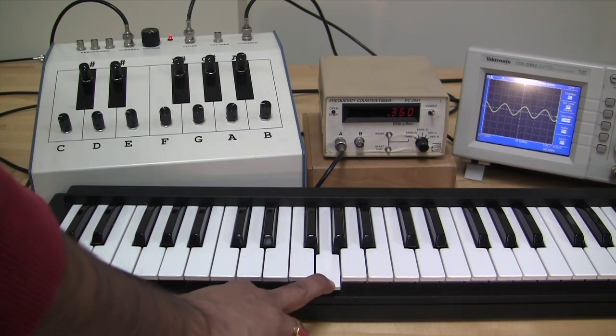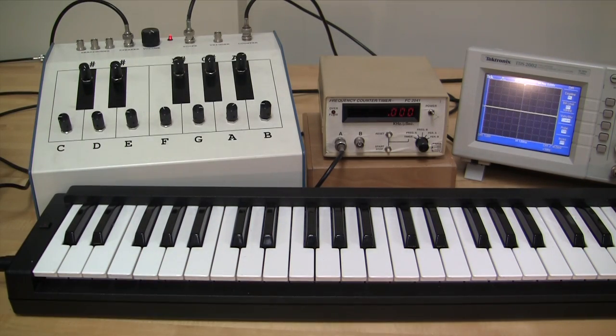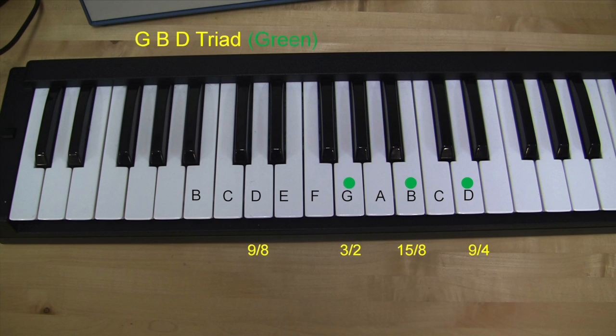Now if the triad is not in perfect ratio and if you play C and E and G together, then you will hear beats and you can see them on the oscilloscope.